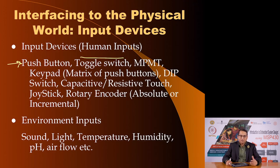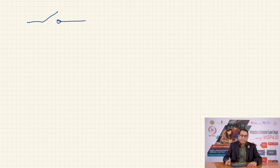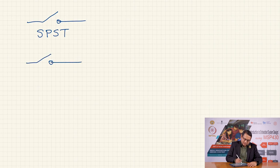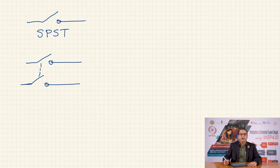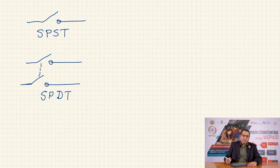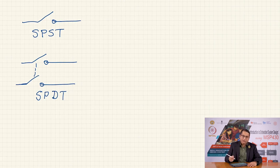We have varieties of toggle switches like single pole single throw (SPST), single pole double throw (SPDT), double pole double throw (DPDT), and we could generalize this to multiple pole multiple throw. To illustrate: single pole single throw means one pole, one throw. Single pole double throw would have two switches operating in parallel, indicated by a dashed line showing they are mechanically coupled. Extending further gives double pole double throw.